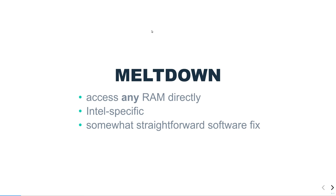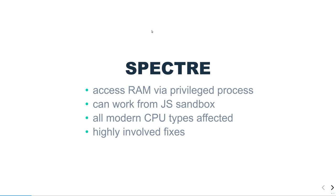Meltdown does allow a user mode process to access any memory on the computer. In Linux, that means even physical RAM, which means a user mode process can read every byte of RAM available to the computer. On Windows it's a little bit more complicated. My experience is mostly with Linux, so I'm going to be talking mainly from a Linux point of view. Spectre allows you to access the memory that another process, or indeed your own process, has access to. It can work from the JavaScript sandbox, and all modern CPU types are affected by Spectre, not just Intel.